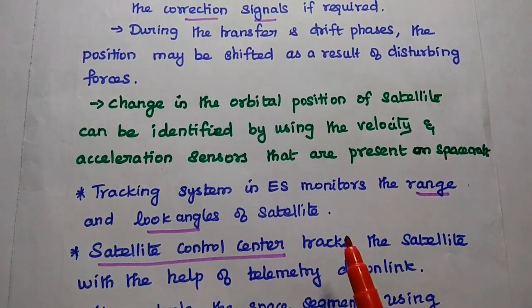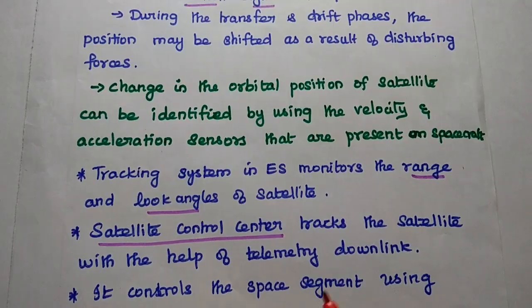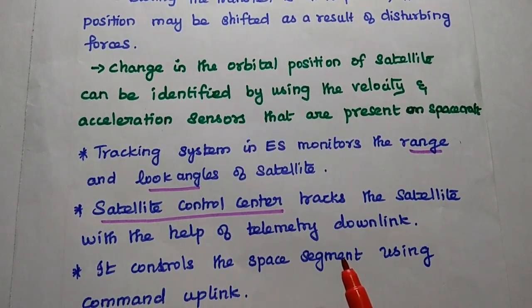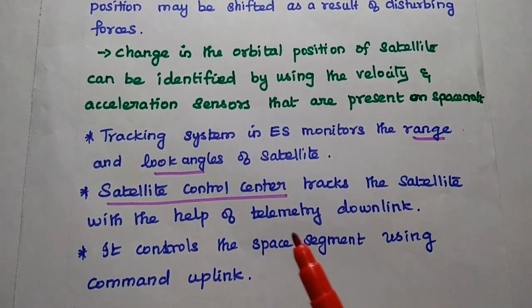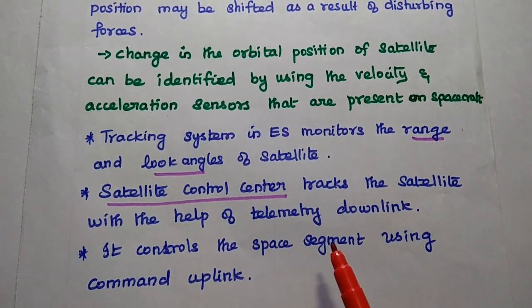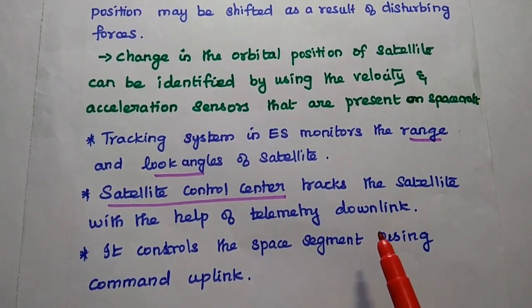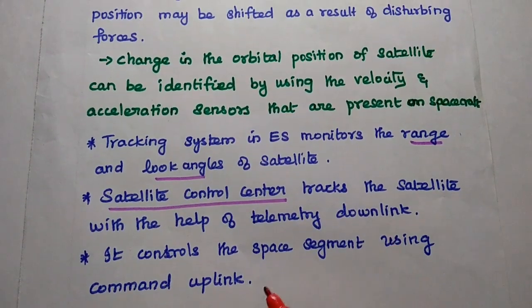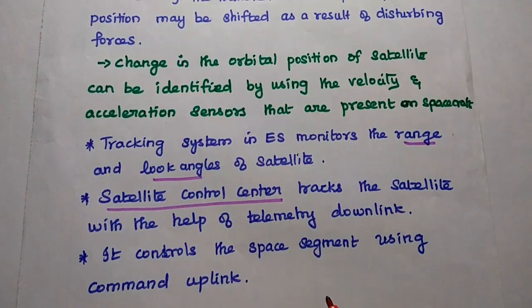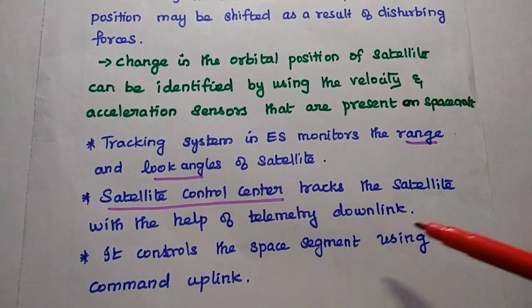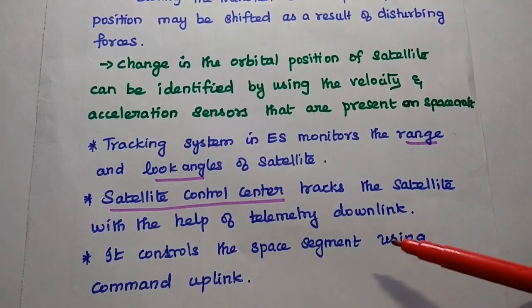The tracking system in the earth station monitors the range and look angles of the satellite to identify and track its position. The Satellite Control Center (SCC) also tracks the satellite with the help of telemetry downlink signals, which carry details from the acceleration and velocity sensors. It controls the space segment, that is the spacecraft, using the command uplink. So tracking uses both telemetry downlink and command uplink systems.